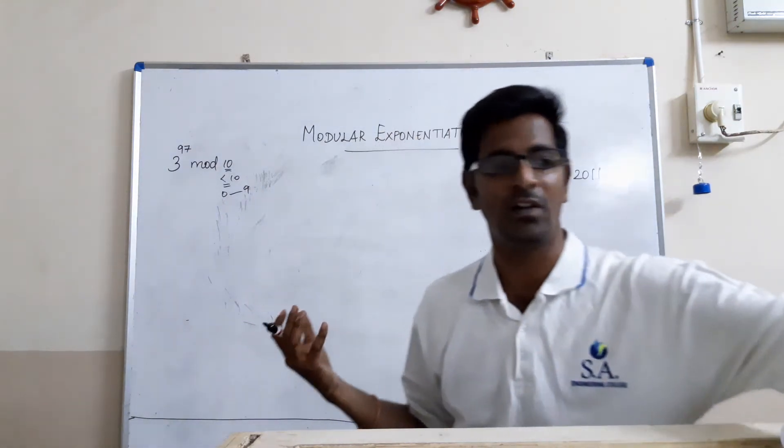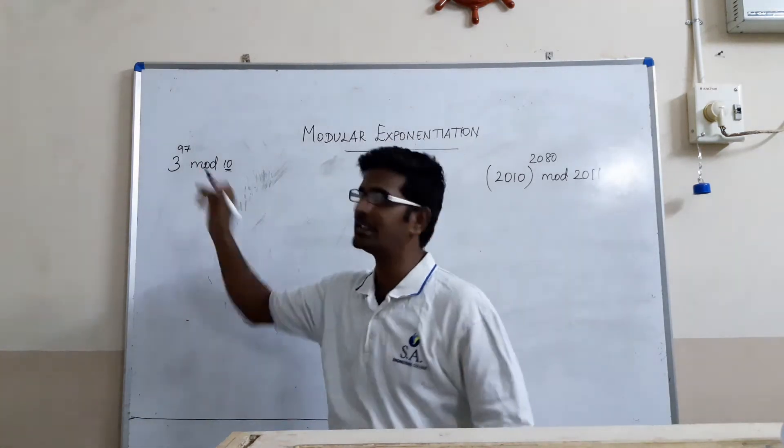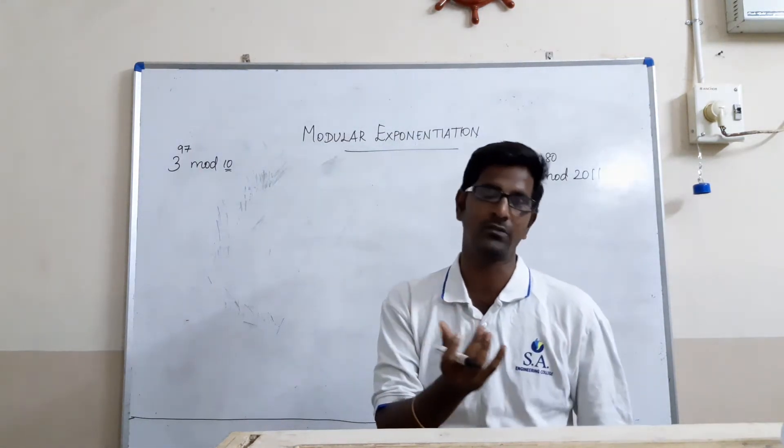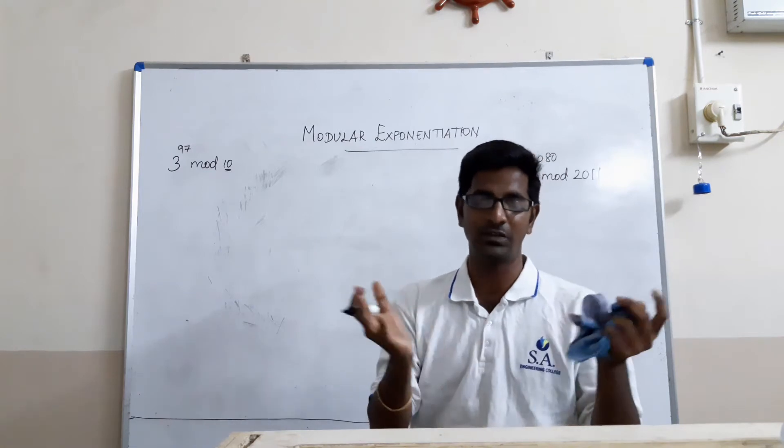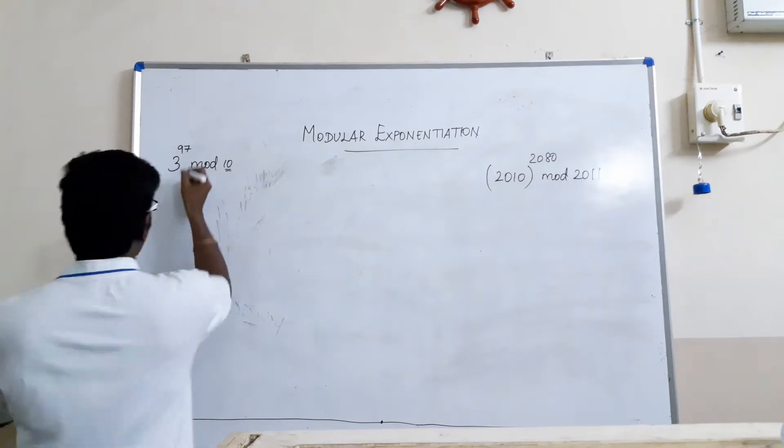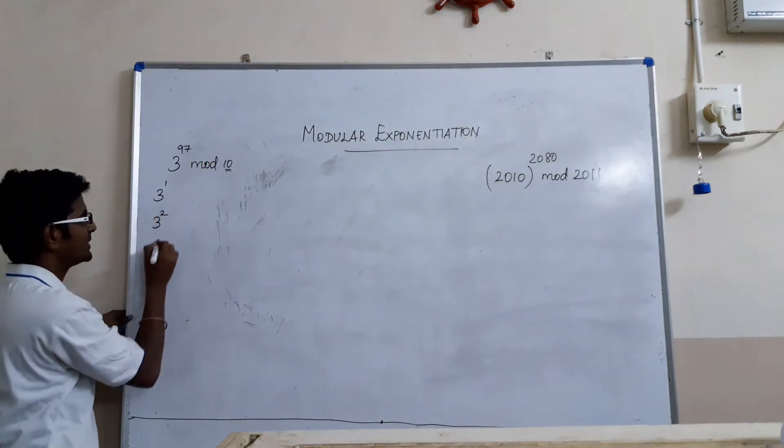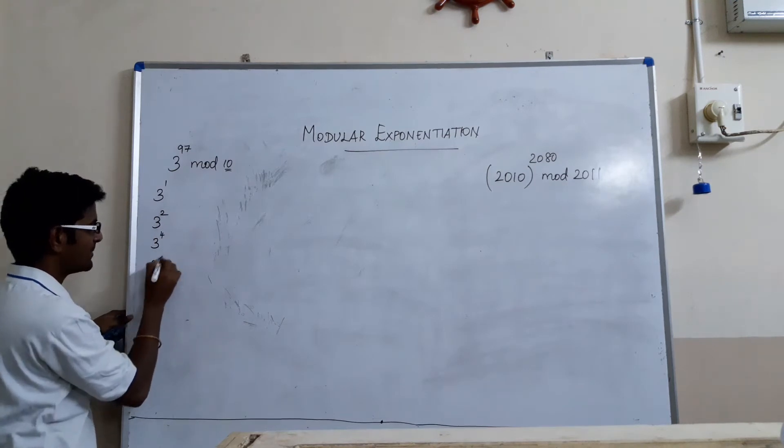How easily we are going to solve it without calculator? See, if you work, if you make this or if you give this 3 power 97 as input to the calculator, our calculator cannot find because our calculator is not having that much computation power. Now, we will start with how to calculate 3 power 97. We will start with 3 power 1, 3 power 2, 3 power 4, 3 power 8.